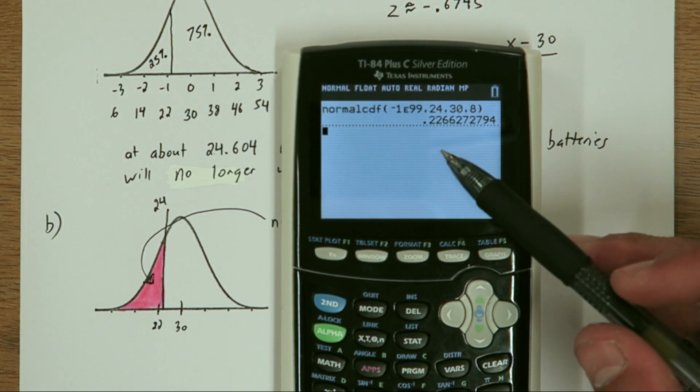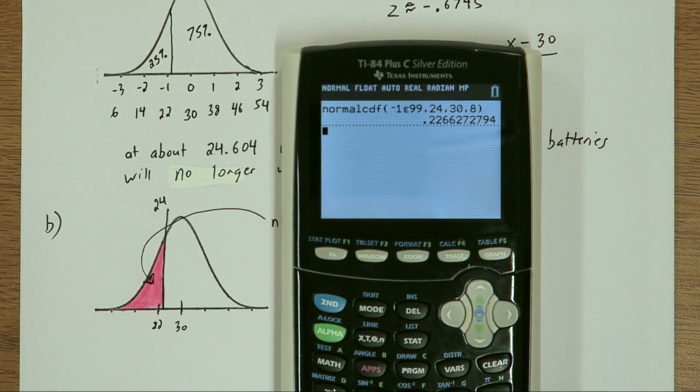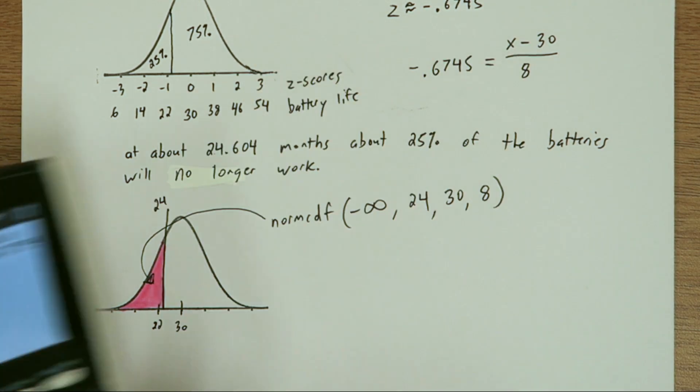So there we go. The actual probability is 0.2266 approximately, a little less than 0.25.